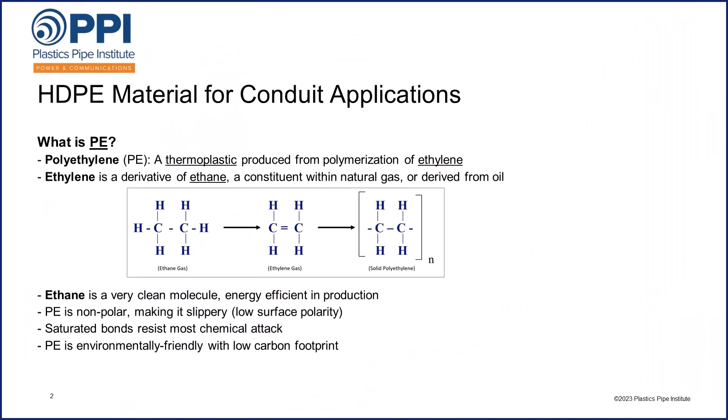But what is polyethylene? Polyethylene, or PE for short, is a thermoplastic material produced from the polymerization of ethylene. Ethylene is a derivative of ethane, which is a constituent within natural gas, or can be derived from oil, and is starting to be produced from biosources and chemical recycling of plastics. The illustration shown here is how you go from ethane into ethylene, a reaction that takes place in devices known as reactors.